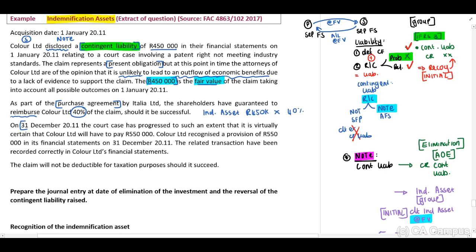On 31 December 2011, which is our year end, the court case has progressed to such an extent that it is now virtually certain. If it is virtually certain — compared to previously when it was unlikely — then in the separate financial statement of Color Limited, we may now recognize a provision. Why? Because we meet the definition as well as the recognition criteria. Color Limited recognized the provision of $550,000 in its financial statement at year end, and the related transactions have been recorded correctly in Color's financial statements.